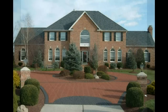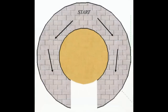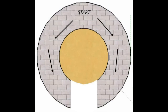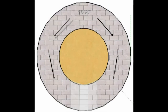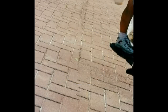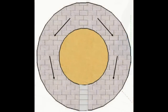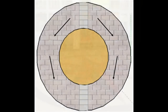Any time you design a pattern that separates to encompass a large obstacle and then meets back up with itself, you must include a border to avoid pattern misalignment. It is also recommended to include the same border on the opposite side of the obstacle to maintain symmetry in your design.